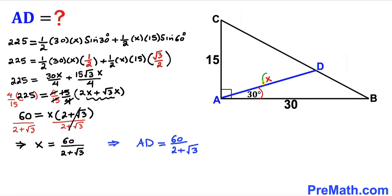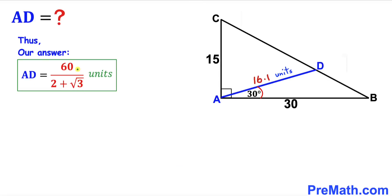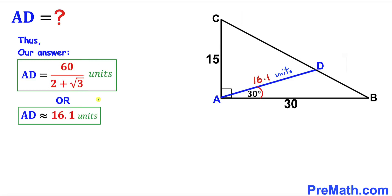Since x represents the length AD, we have AD equals 60 divided by the quantity 2 plus square root of 3 units, which is approximately equal to 16.1 units. Thanks for watching, and please don't forget to subscribe to my channel for more exciting videos.